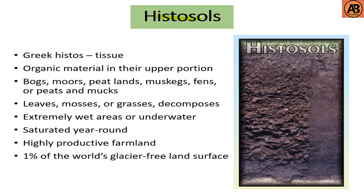Next are Histosols. Histosols come from the Greek word histos, meaning tissue. They are dominantly composed of organic material in their upper portion. The picture shows very dark color, indicating high organic material content. They are found in bogs, moors, peatlands, mucks, and fens.